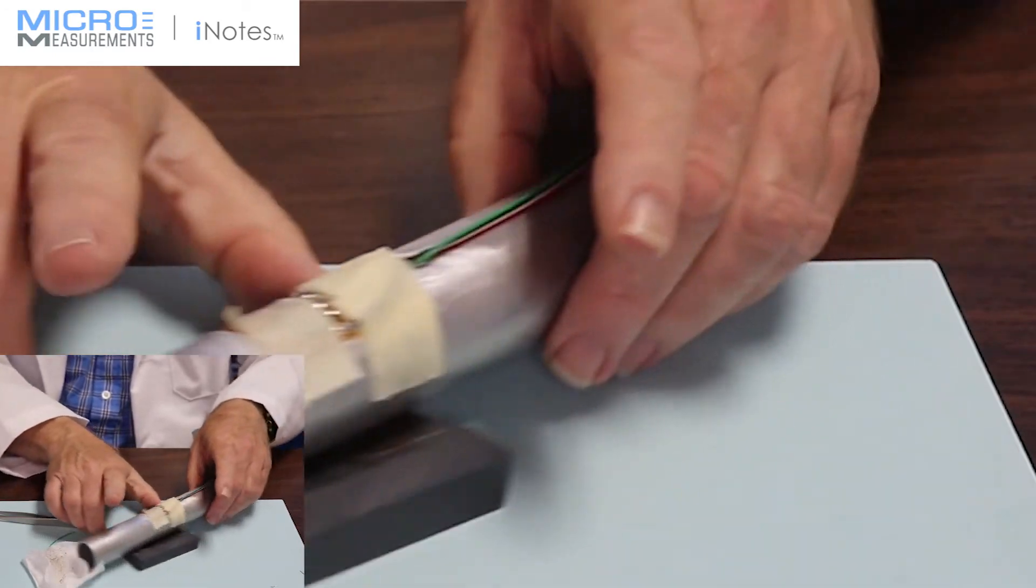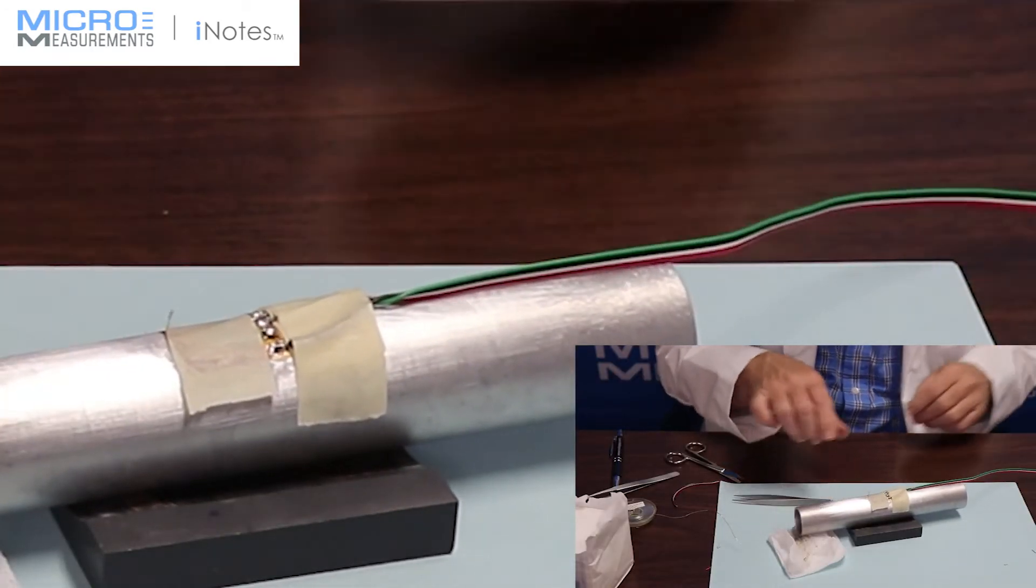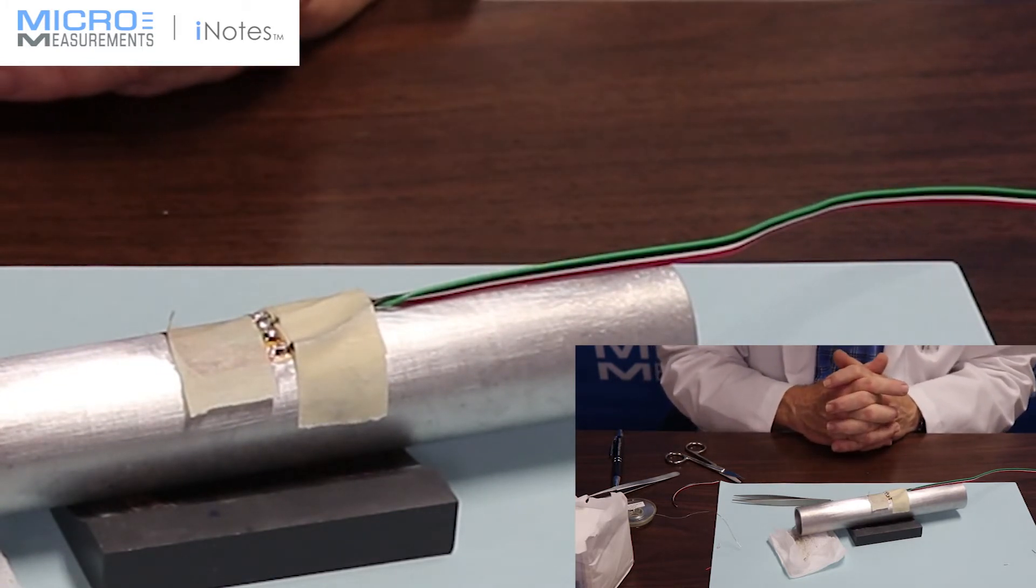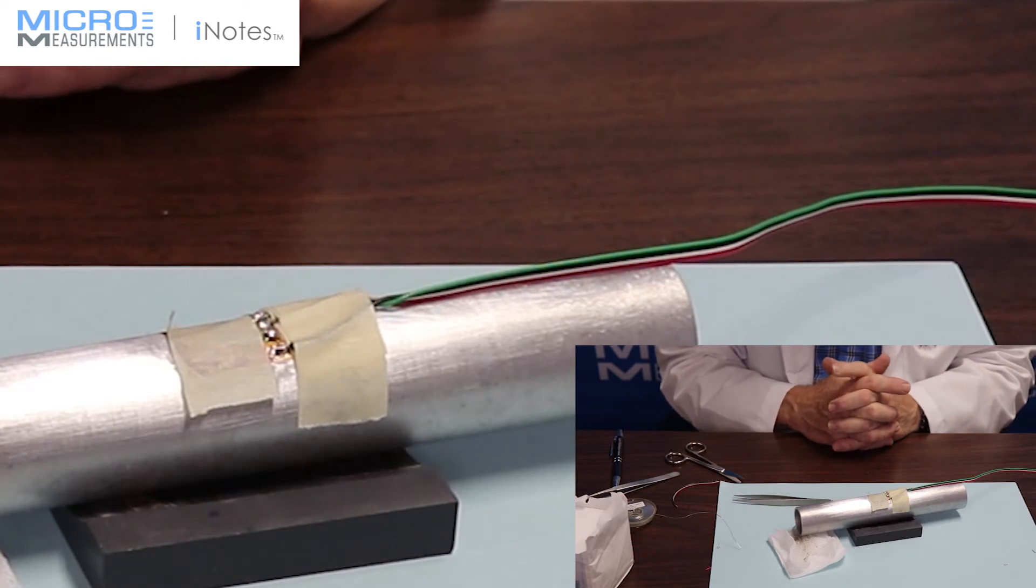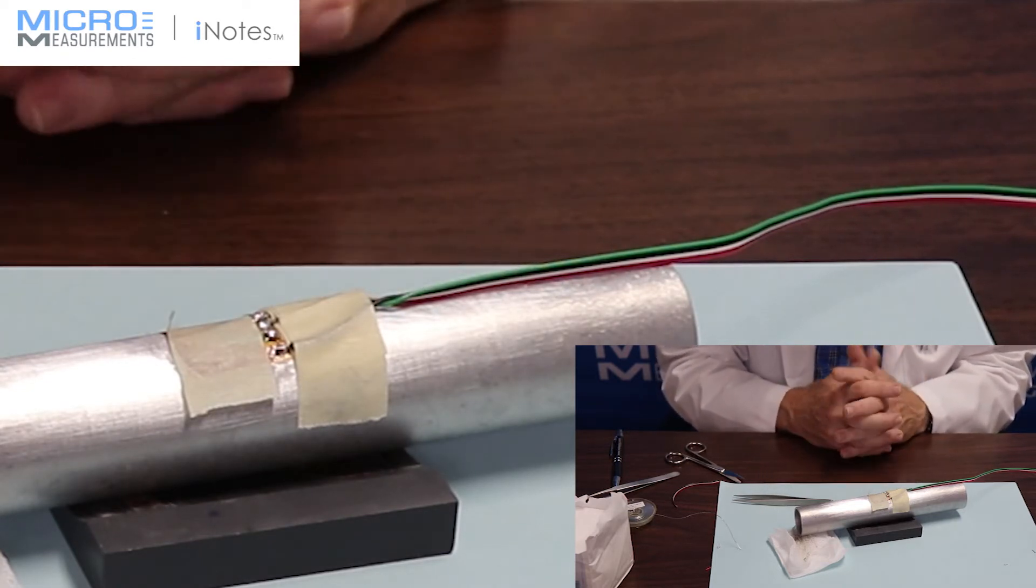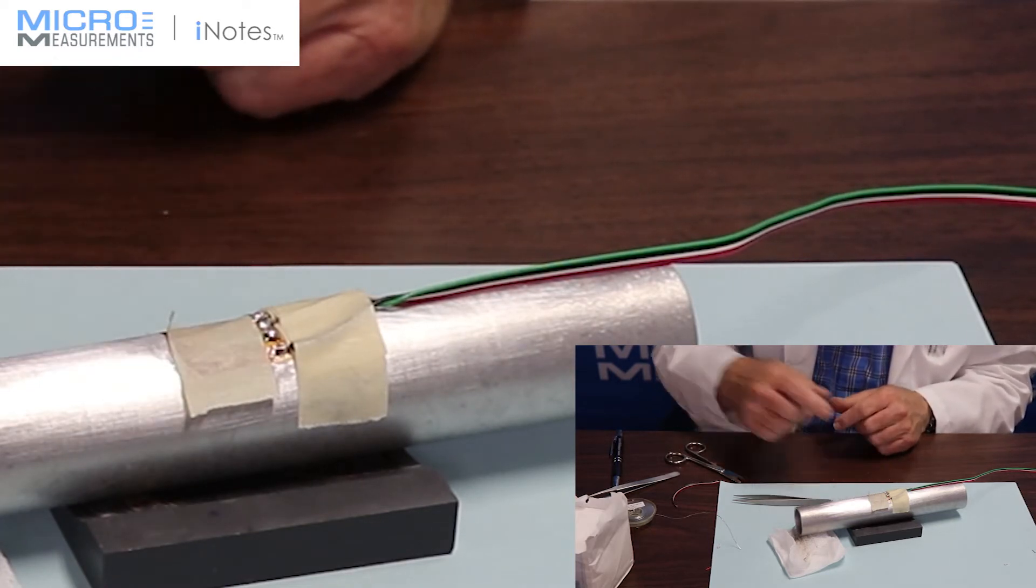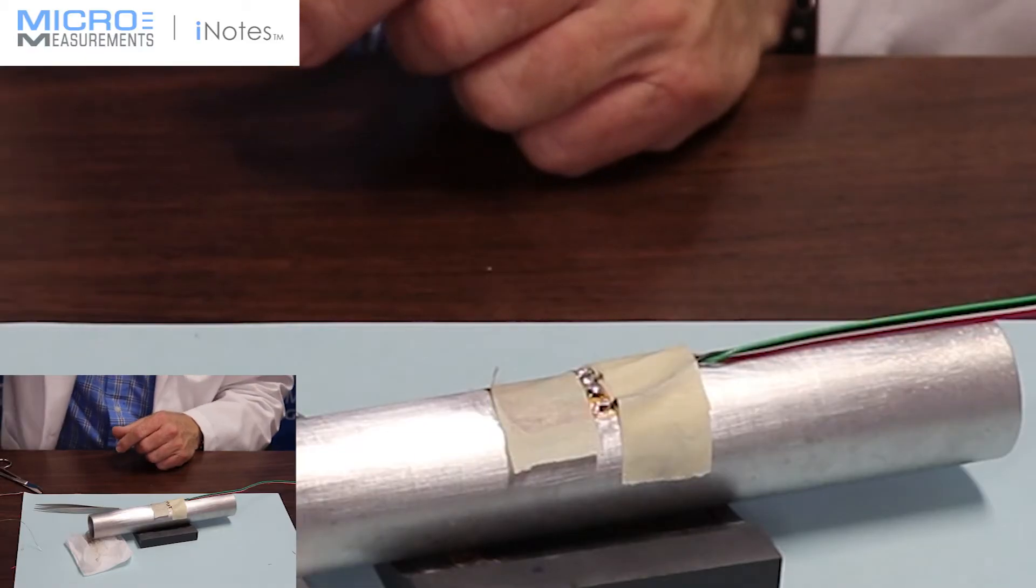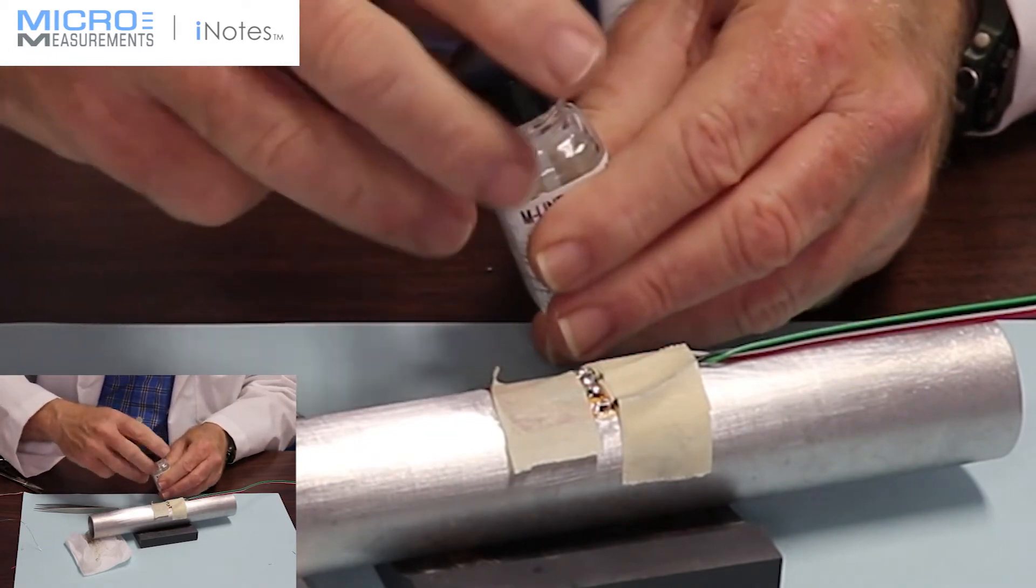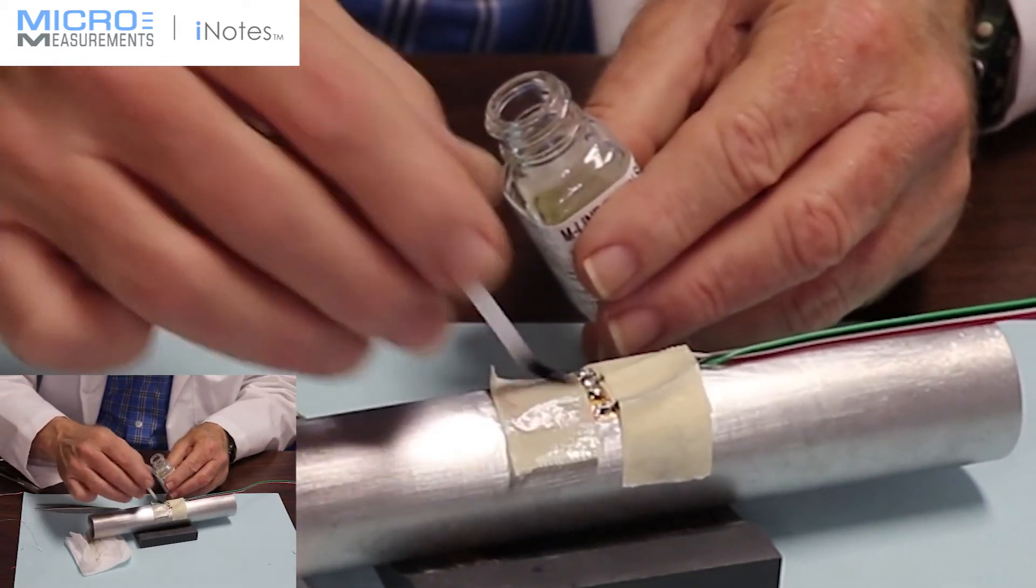We now have completed the wiring of this particular assembly. We could in theory just rip this tape off and we might be successful, but our recommendation is twofold. One, we want to take the tape off without damaging the gauge or the wiring associated with it. And two, we want to begin the process of removing the flux of the soldering operation. I'm going to use our M-Line Rosin Solvent. I'm going to paint that over the back of the tape to start breaking down the mastic of the tape.